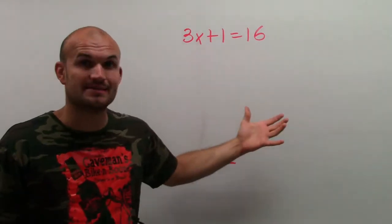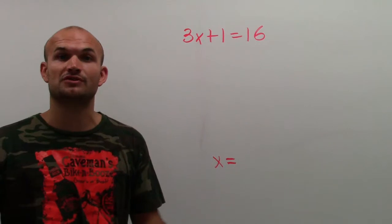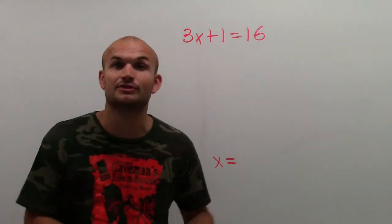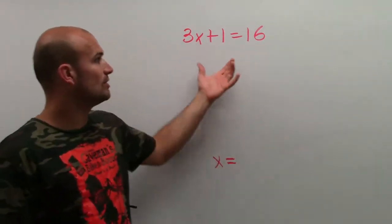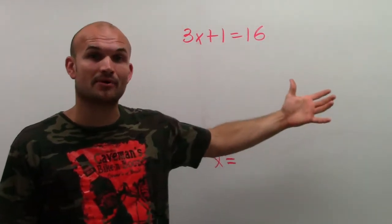Now, for one-step equations, it was pretty easy, because there was only one operation going on. So if it was adding, you did the inverse, which is subtraction. If it was multiplying, you did the inverse, which is divide. Well, here I have two different operations. So I need to use both inverse operations.